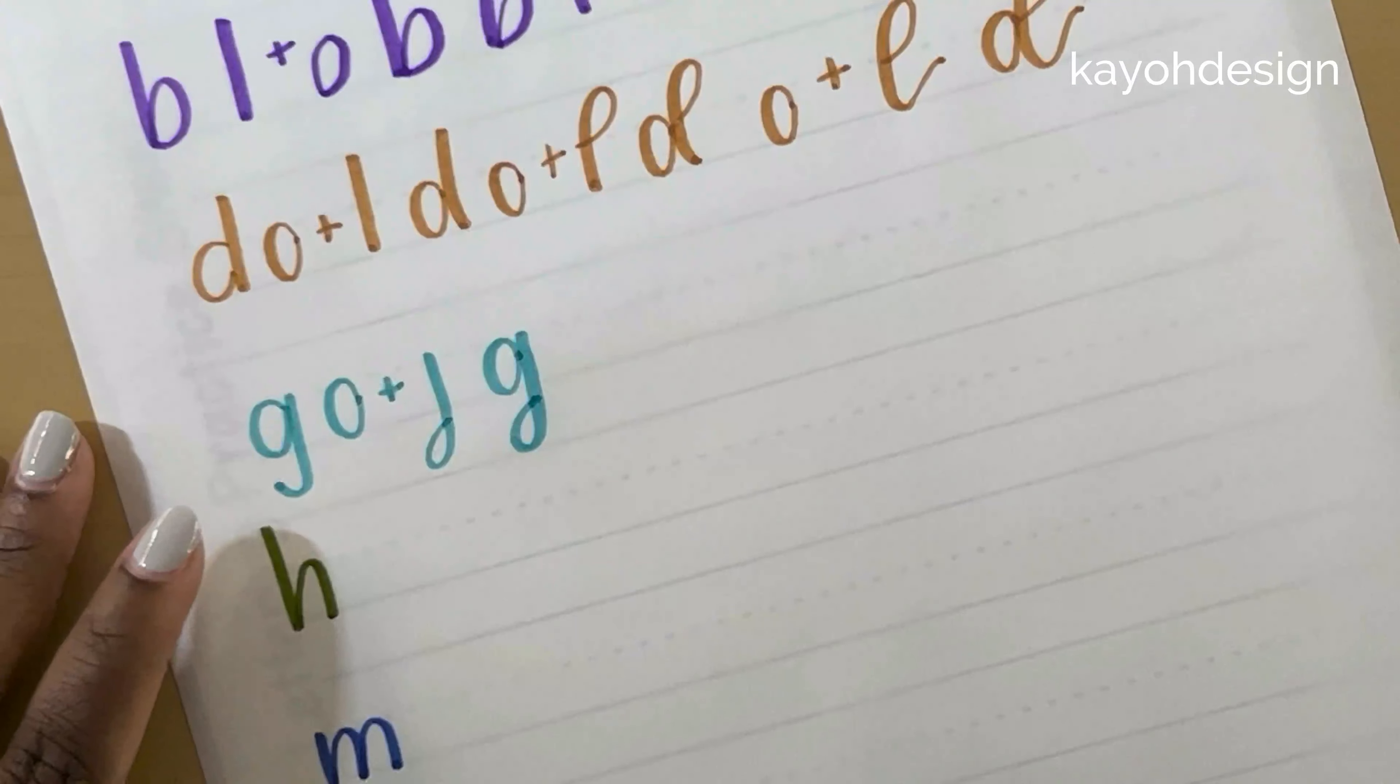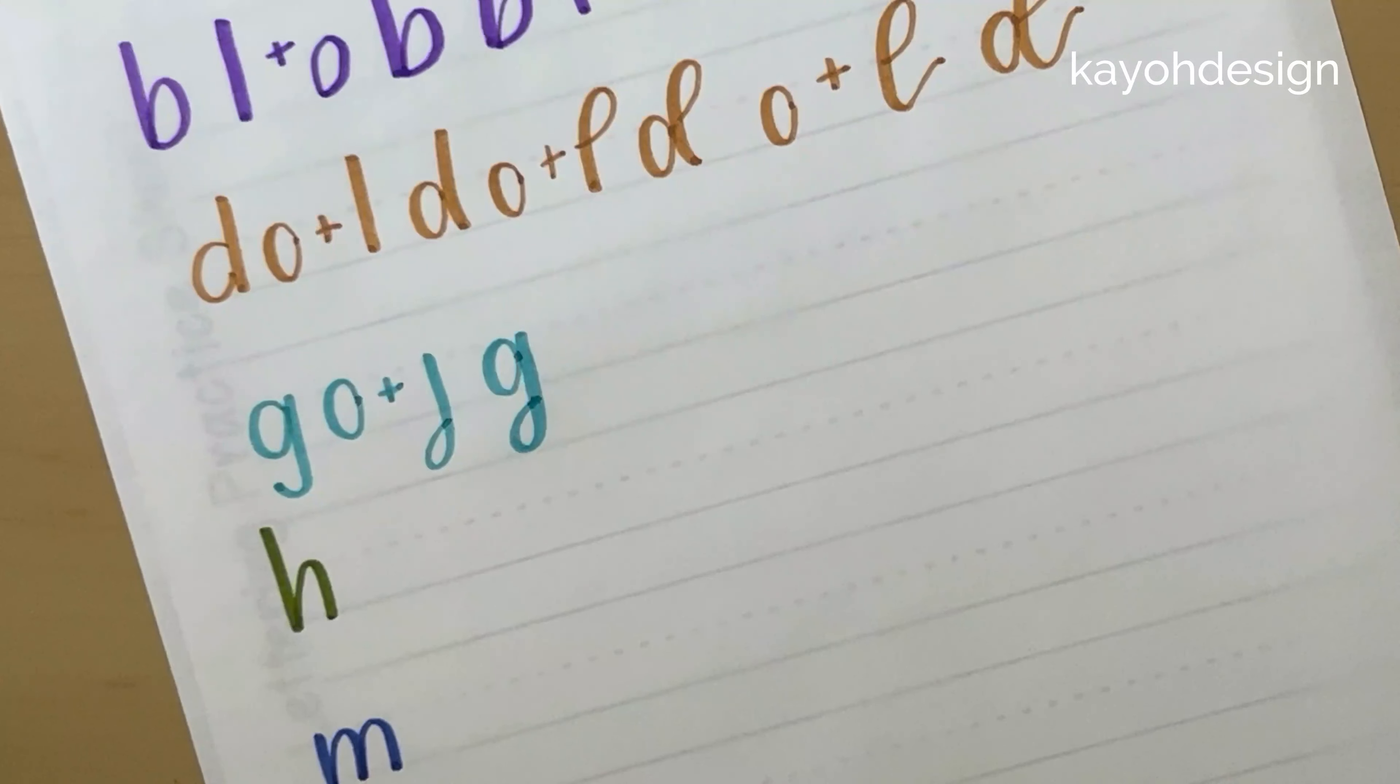And again, you can make these letters as fancy or as simple as you want. They can have different shapes. They can be more squashed, flattened like a hamburger or tall like a skyscraper. It really just depends on your style and the look that you're going for. You just have to practice it.